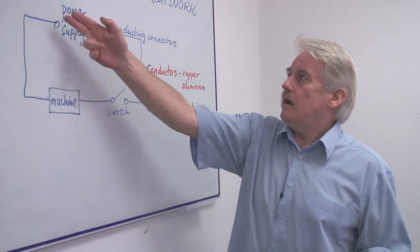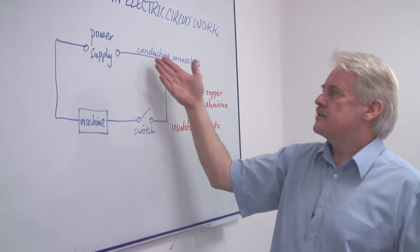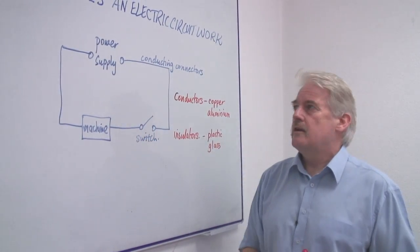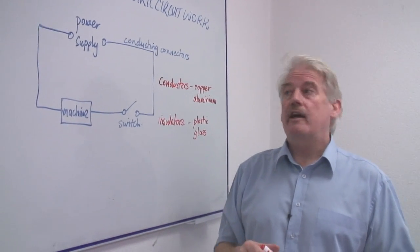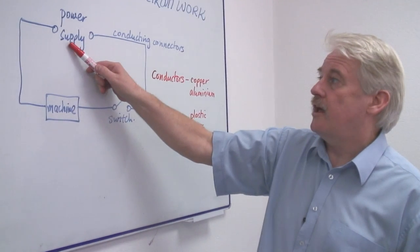So in our circuit, this is a circuit, this is a representation of a circuit. But in a circuit, to make electric current flow, you have to have a supply of power, a power supply.